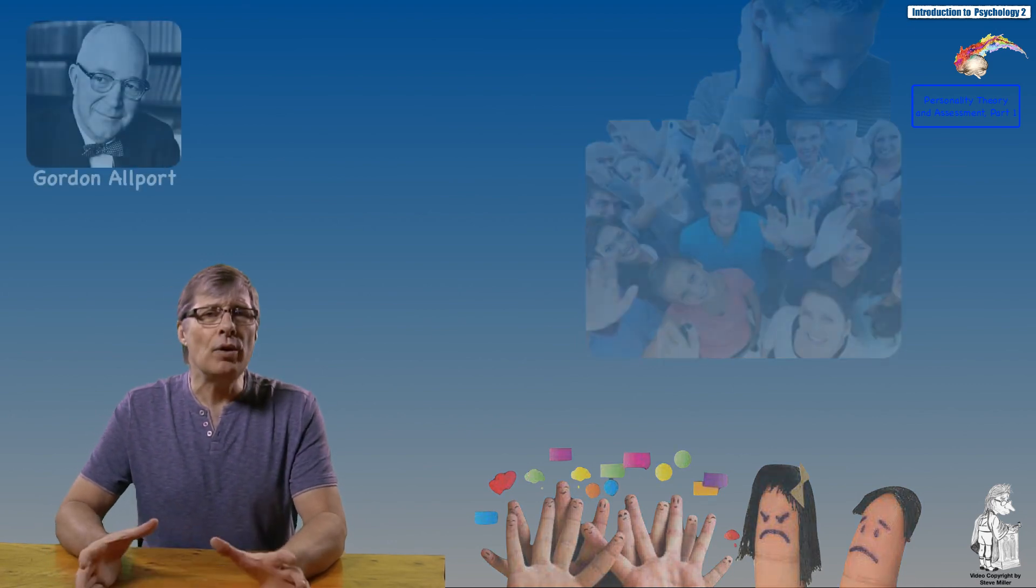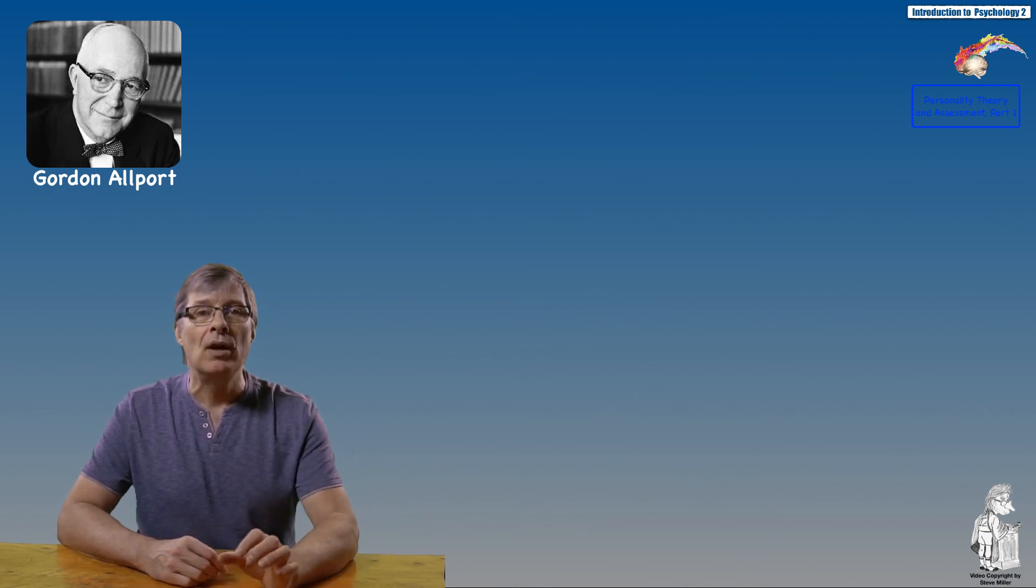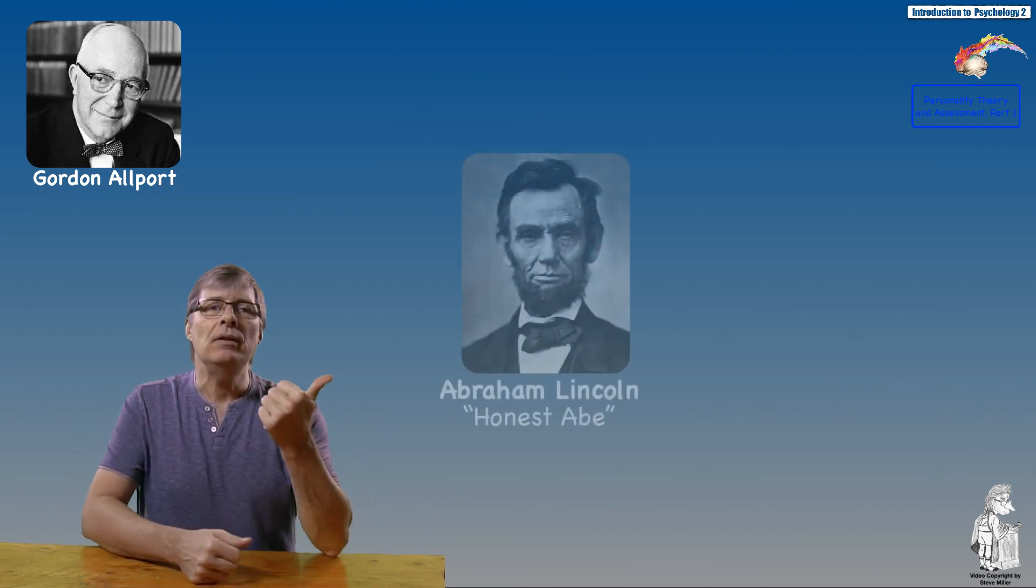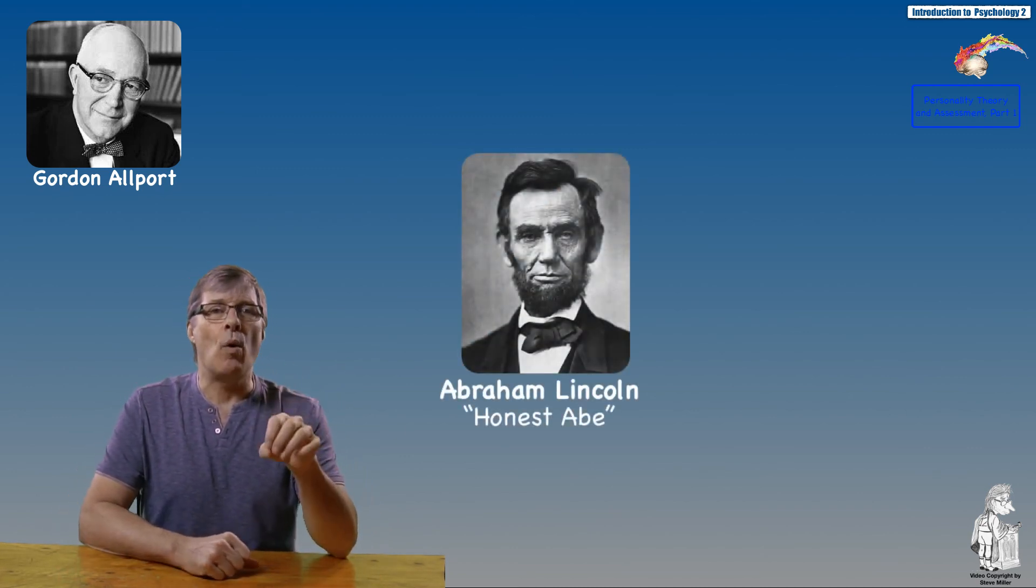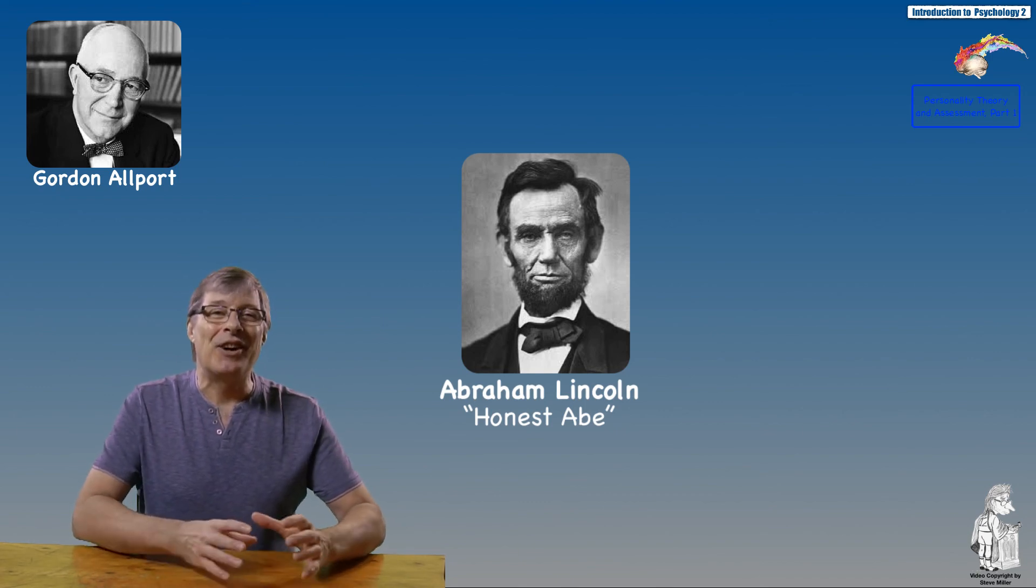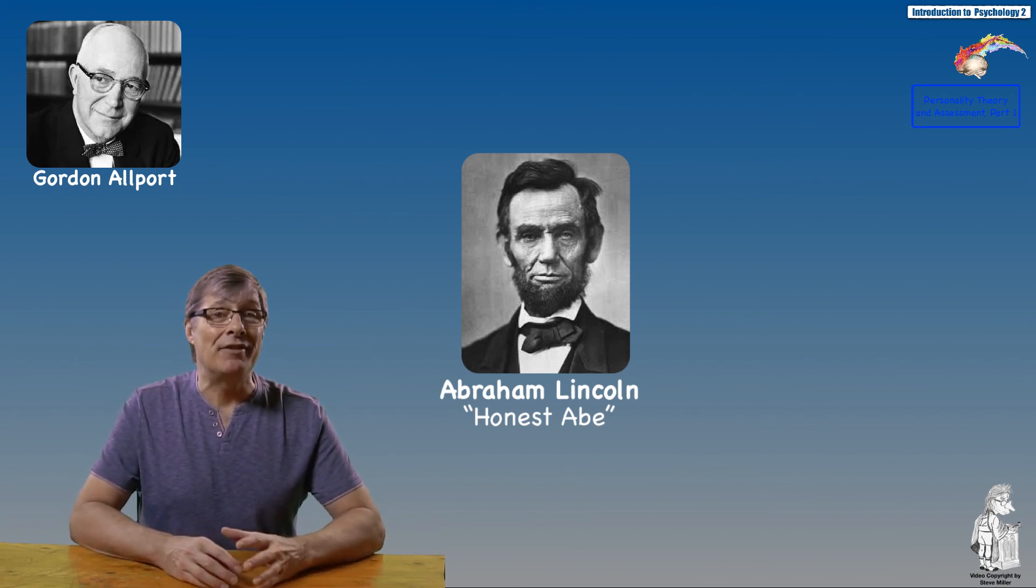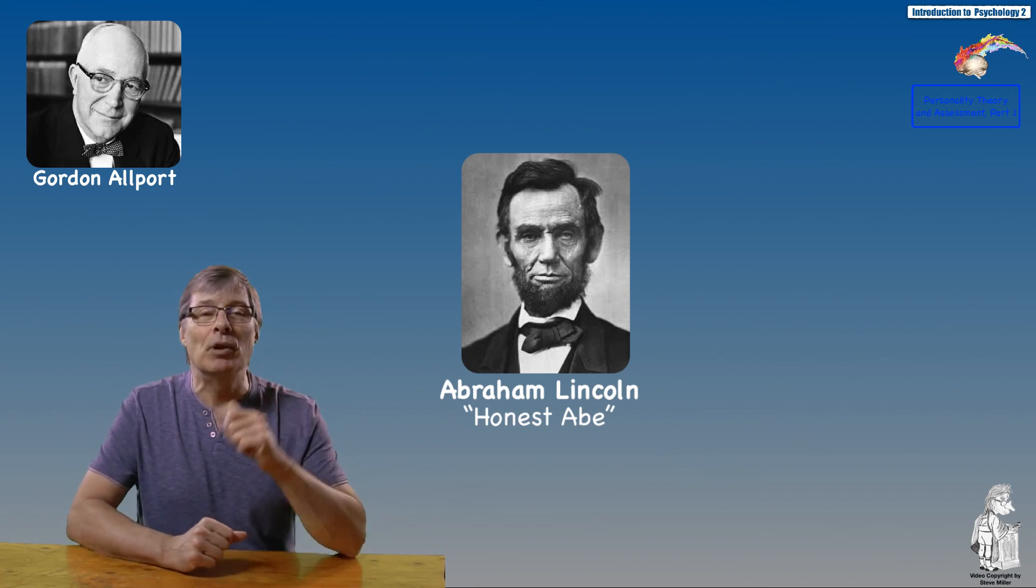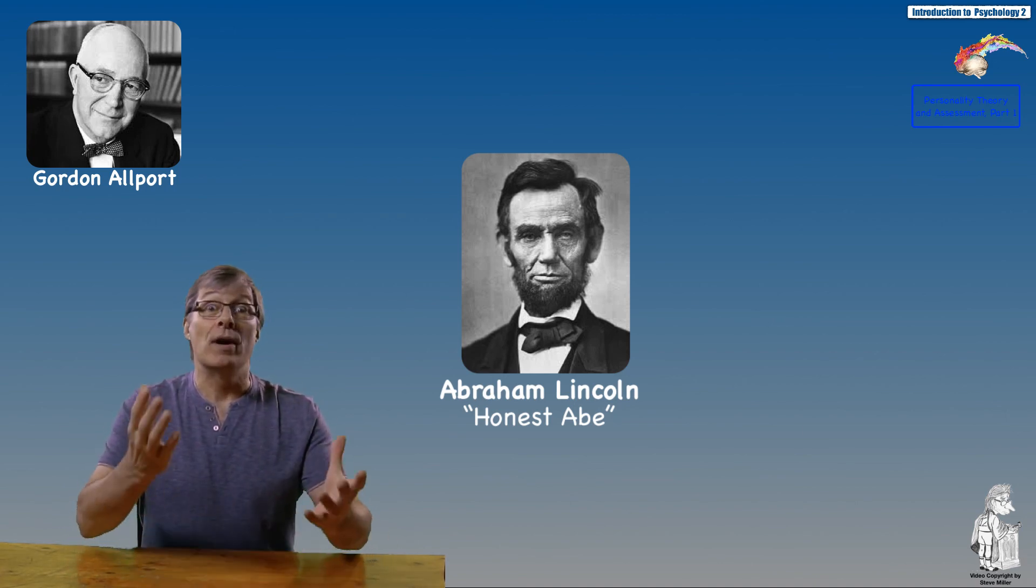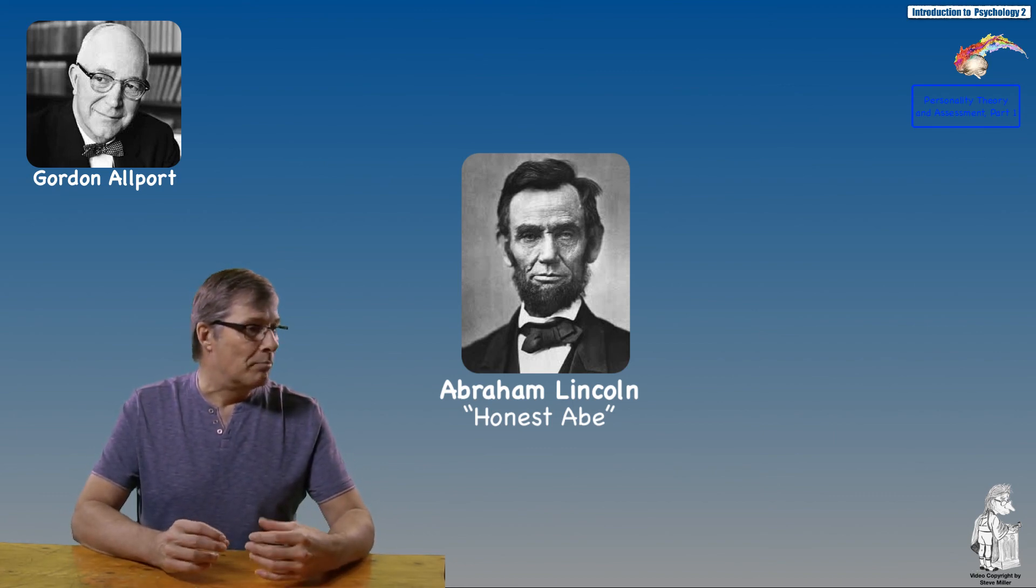Gordon Allport identified two main categories of traits: common and individual traits. Common traits are those we share or hold in common with most others in our culture. Far more important to Allport were three types of individual traits. One, the cardinal trait—a personal quality that is so strong that a person may become identified with that trait or known for it. I have Abe Lincoln here; the cardinal trait was honest Abe. That is something that supersedes all elements about Abe Lincoln.